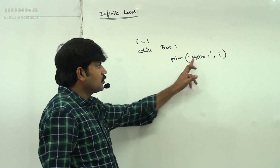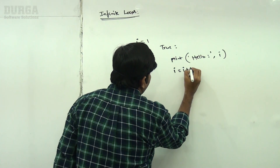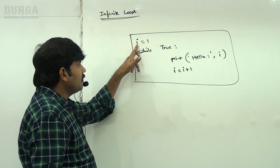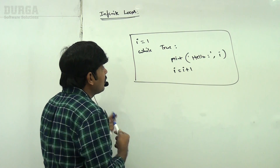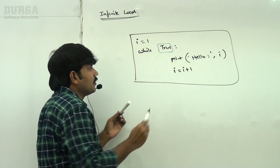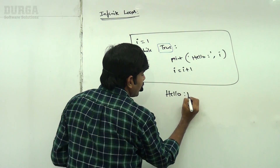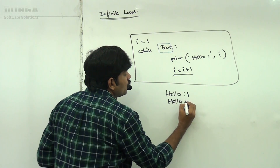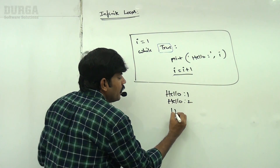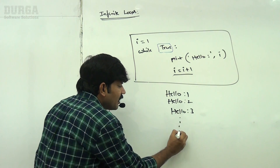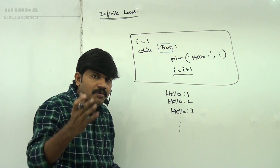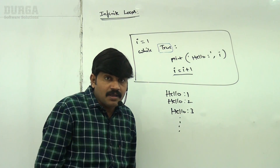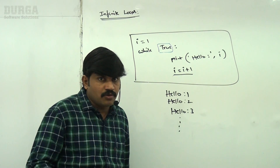Inside the loop I'm printing hello and the i value — so hello 1, hello 2 — and then i = i + 1. Can you tell when this loop will stop? Observe: i is 1, while True — the condition is always true, so it executes the body forever: hello 1, hello 2, hello 3... This cycle will never be stopped. This type of concept is called an infinite loop.